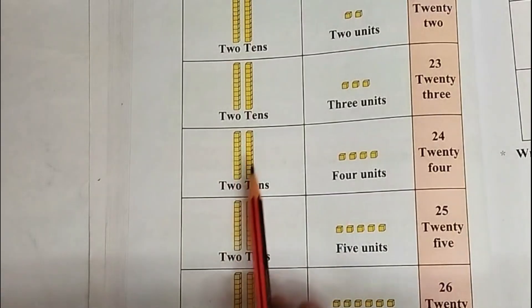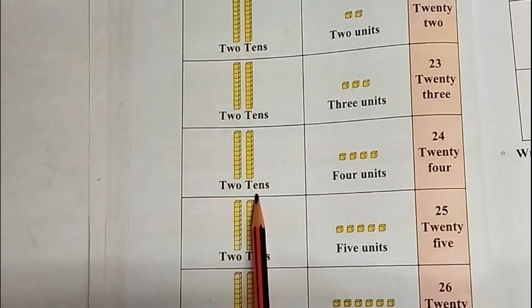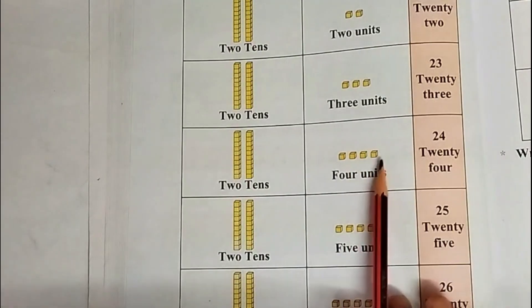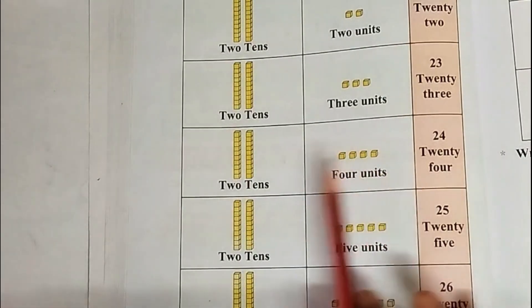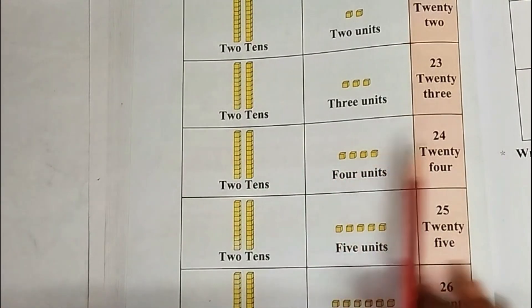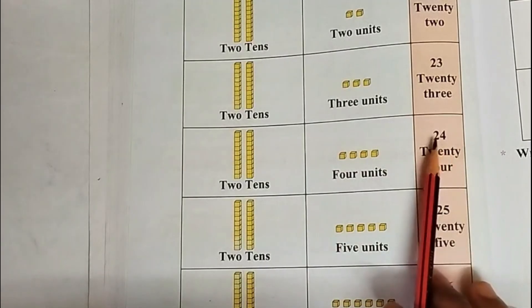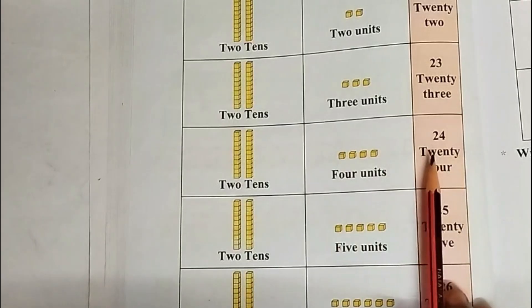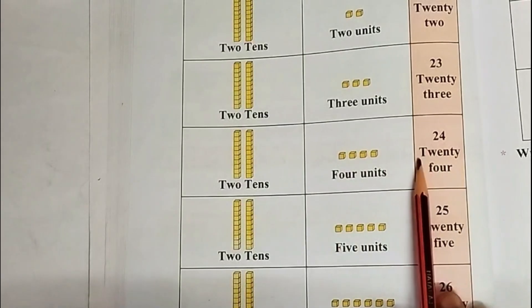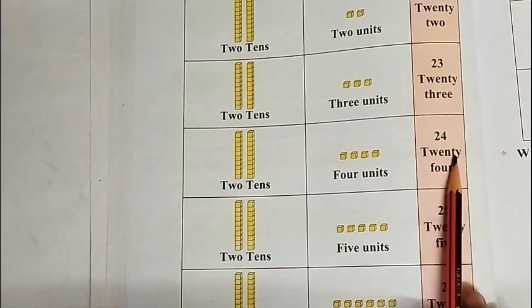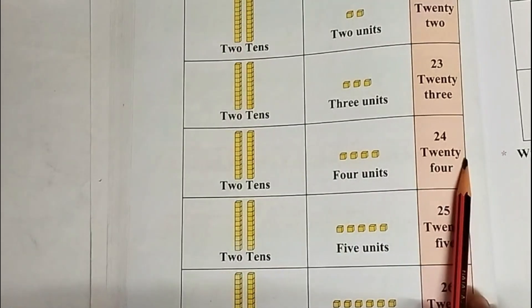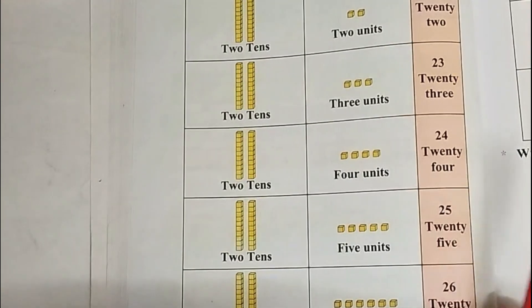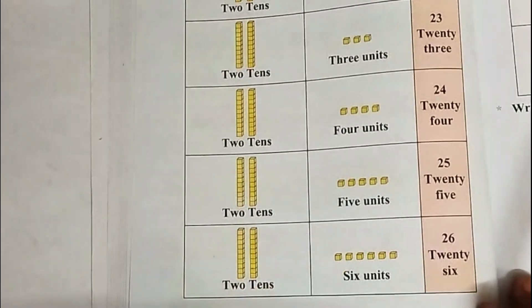1 tenth, 2 tenths, and 4 units: 24. In figure: 24. In words: T-W-E-N-T-Y (20) F-O-U-R: 24.